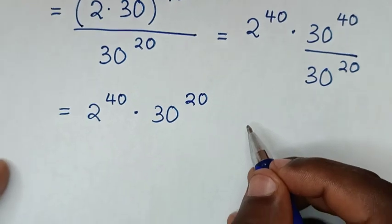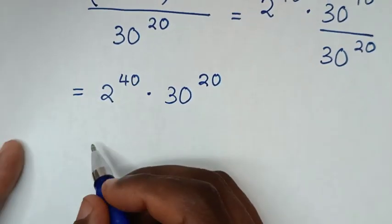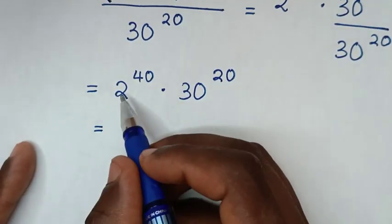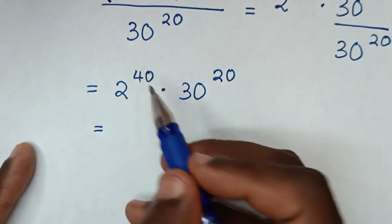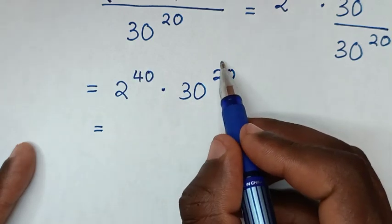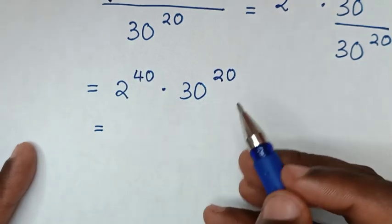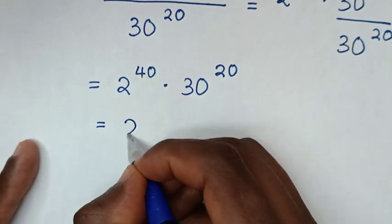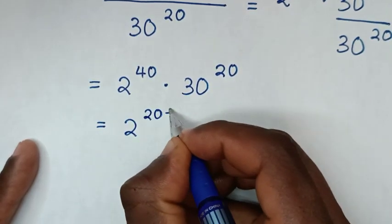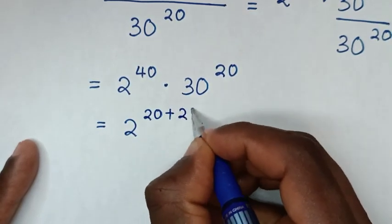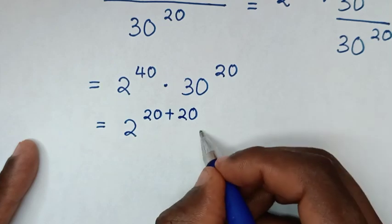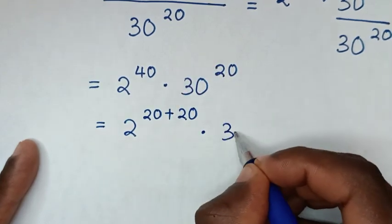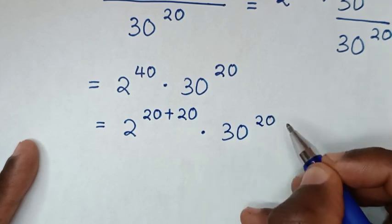Then in the next step, we make this power of 40 have a common power of 20. So 2 power of 40 is the same as 2 power of 20 plus 20, then times the exponent 30 power of 20.